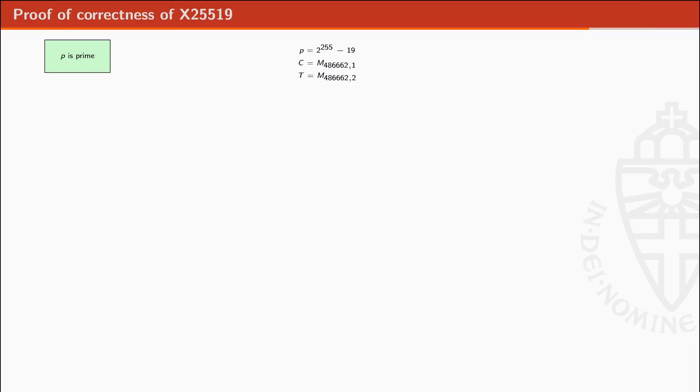So here is the final proof. We prove that p is prime using Pocklington certificates. We derive Fp. Using Legendre symbol, we prove that A square minus 4 is not a square in Fp. And we define the Montgomery curve and the twist using the same parameters as Curve25519.